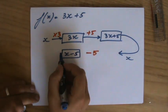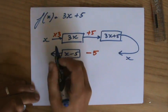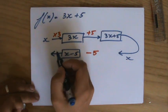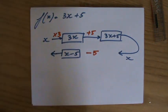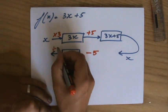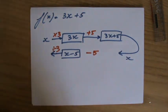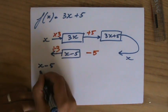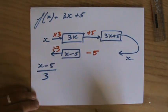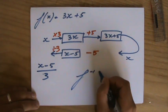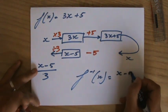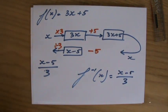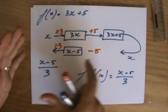And then the inverse: what is the opposite of timesing it by 3? That indeed is dividing it by 3. So divide x minus 5 by 3. So the inverse function of x equals x minus 5 over 3.